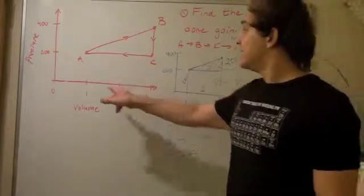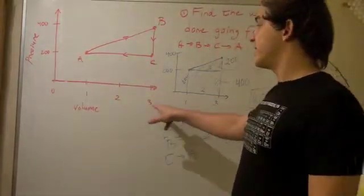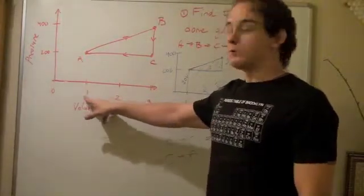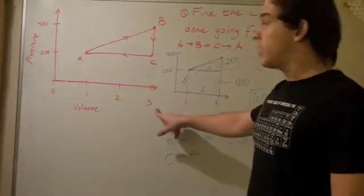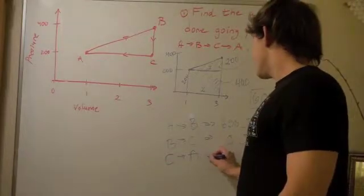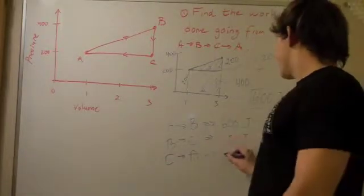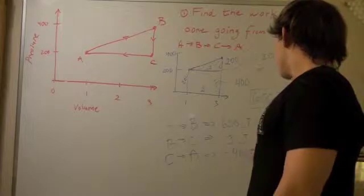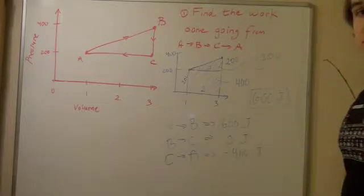But now it's 1 minus 3, because it's the final volume minus the initial volume. So, we get 1 minus 3 is negative 2. So, negative 2 multiplied by 200 is negative 400 joules.